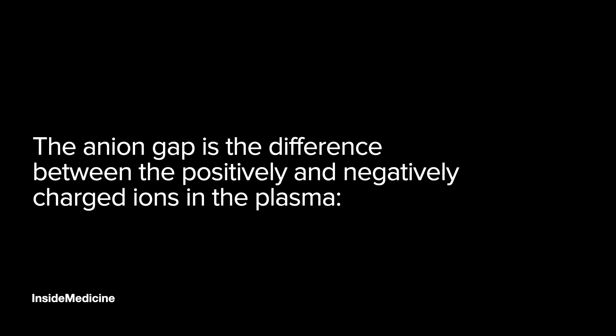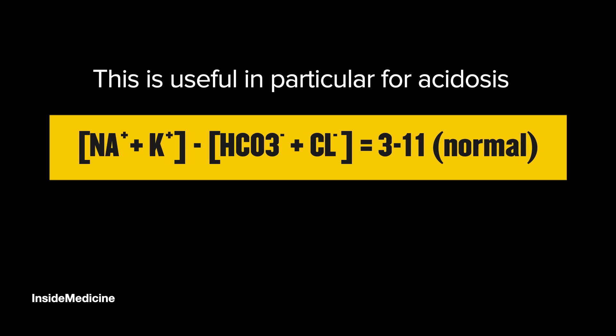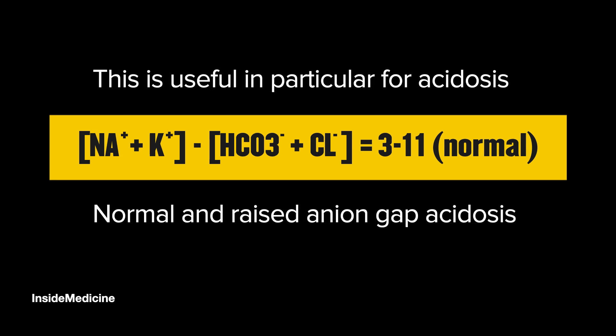Now we're going to talk about the anion gap. The anion gap is the difference between the positively and negatively charged ions in the plasma. We estimate this using sodium and potassium as our positive ions, and bicarbonate and chloride as our negative ions. The normal range is 3 to 11. This is particularly useful in acidosis, which can be divided into acidosis with a normal anion gap and acidosis with a raised anion gap.